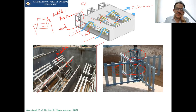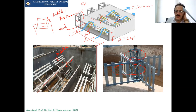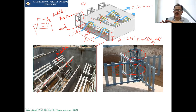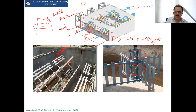The area of the paddles should be 10 to 20% only of the whole cross-sectional area, so the water goes through the paddles and is mixed. We need to know how much power is required for this rotation. We also need the volume. The volume depends on G. G equals the square root of P divided by (volume × μ), and G is between 10 to 80 per second.